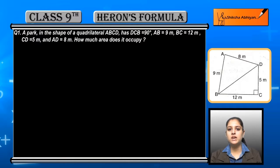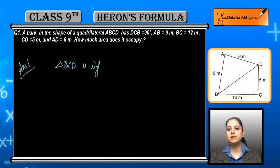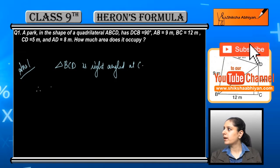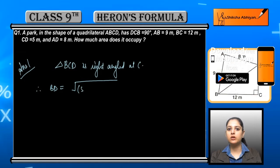The quadrilateral given has one 90-degree angle and the rest of the sides are given, so we have to find that area. Let us see how. First of all, the quadrilateral can be divided into triangles. Triangle BCD is a right-angle triangle because one angle is 90 degrees, right-angled at C. You know that in a right-angle triangle, we don't need Heron's formula.